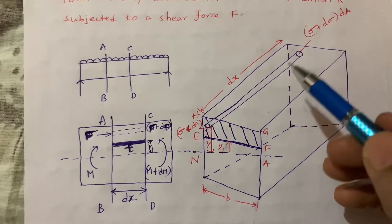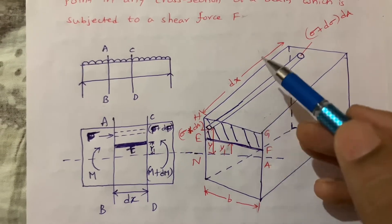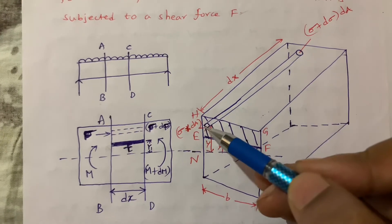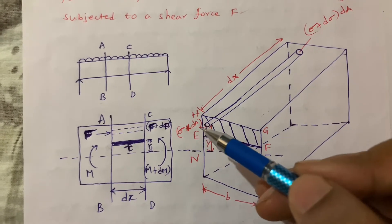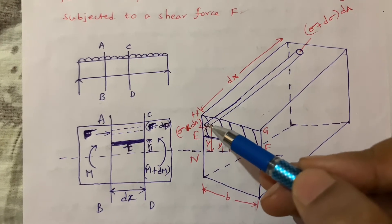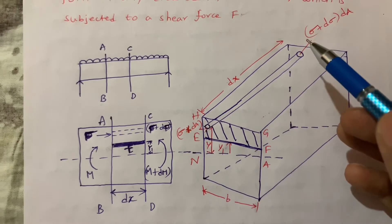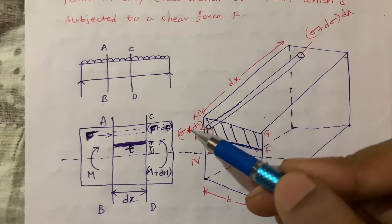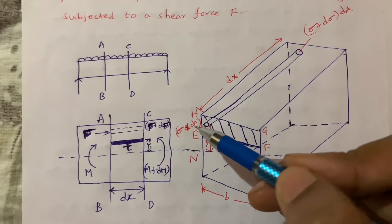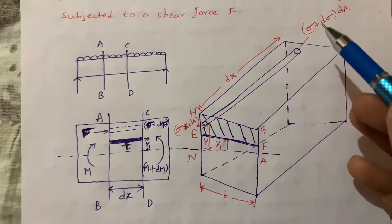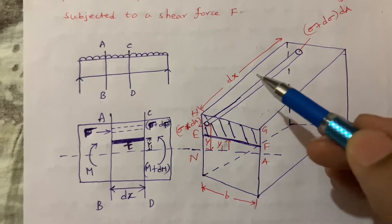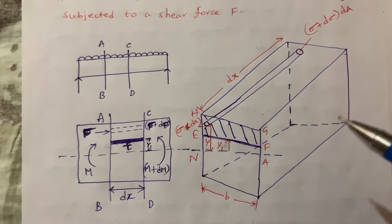The length of this cylinder is DX, the area is DA, and the bending stress is sigma plus D sigma into DA. Sigma plus D sigma is the bending stress and DA is the area.